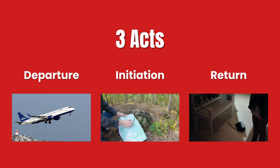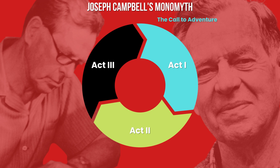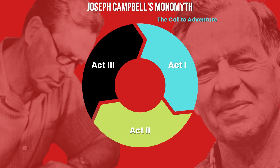In Campbell's version of the monomyth, there are 17 stages. The first stage in the departure, or Act 1, is the call to adventure, where something or someone interrupts the hero's day-to-day life to present a problem, threat, or opportunity. This leads to the second stage, the refusal of the call, where the hero is hesitant to embark on the journey. This initial refusal is squashed by the third stage, supernatural aid, where a mentor gives the hero confidence to begin their journey. When they officially begin their quest, they enter the fourth stage, the crossing of the first threshold. Finally, the last stage in Act 1 is the belly of the whale, where the hero crosses the point of no return and faces their first major obstacle.